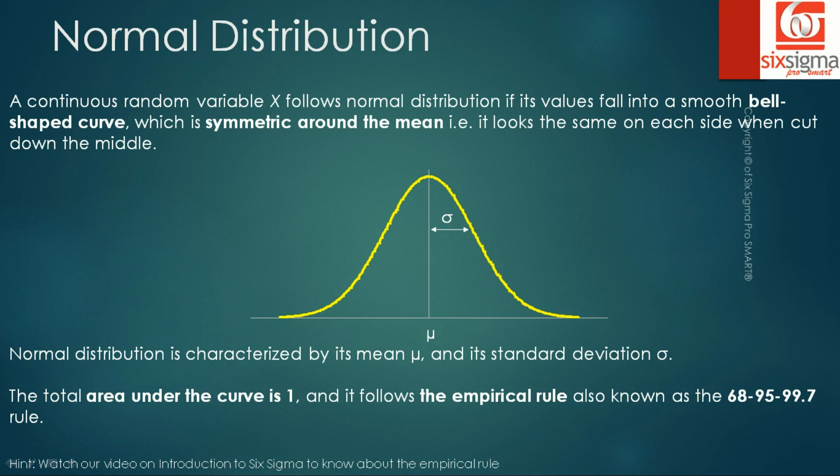The total area under the curve is 1. Please note that the area under the curve in case of a normal distribution is nothing but the probability. And as we know, the probability can be a minimum of 0 when an event will not happen at all, or it can be at the highest 1 which is an absolutely certain event. Since the area under the curve represents the probability, when we add up all the possibilities it can only become 1. A normal distribution follows the empirical rule, also known as the 68-95-99.7 rule. Now please watch our video on introduction to Six Sigma where we covered this rule. Important takeaways: normal distribution is a bell-shaped curve, it is symmetrical around the mean, the total area under the curve is 1, and it follows an empirical rule.